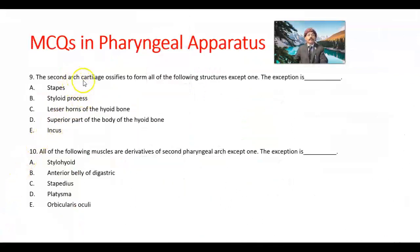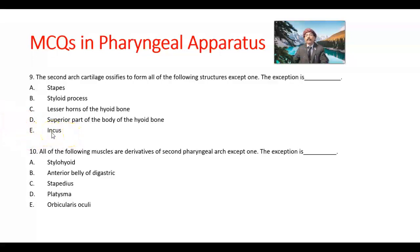Question number 9. The second arch cartilage ossifies to form all of the following structures except one. Options: stapes, styloid process, lesser horn of the hyoid bone, superior part of the body of the hyoid bone, and incus. The answer is incus. The incus and malleus are coming from the first arch. All others — stapes, styloid process, lesser horn, and superior part of the body of the hyoid — come from the second arch.